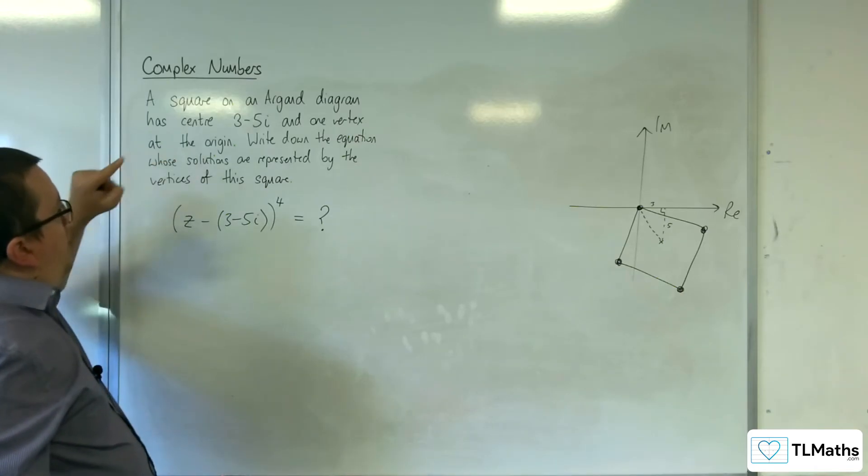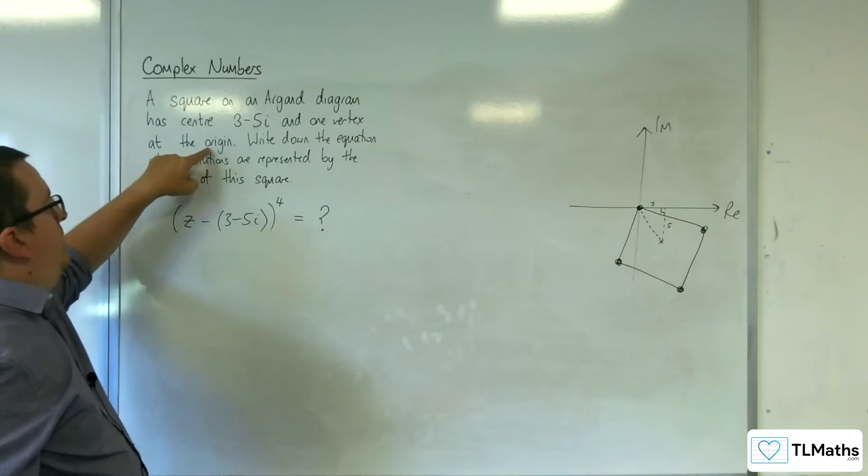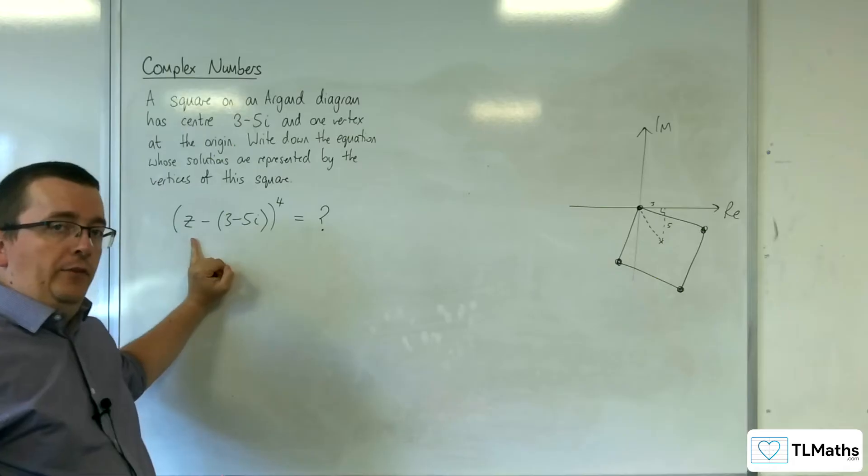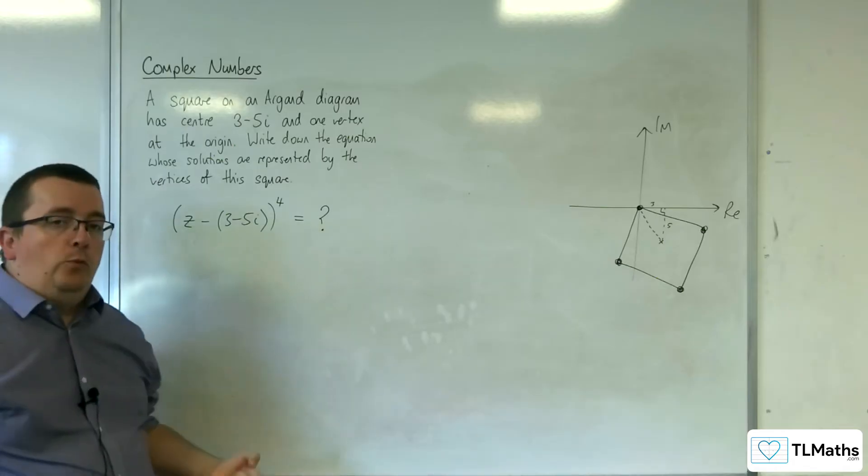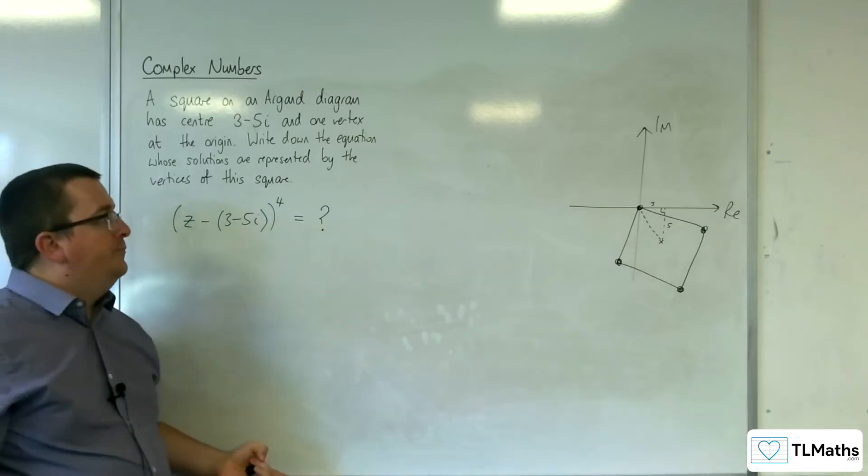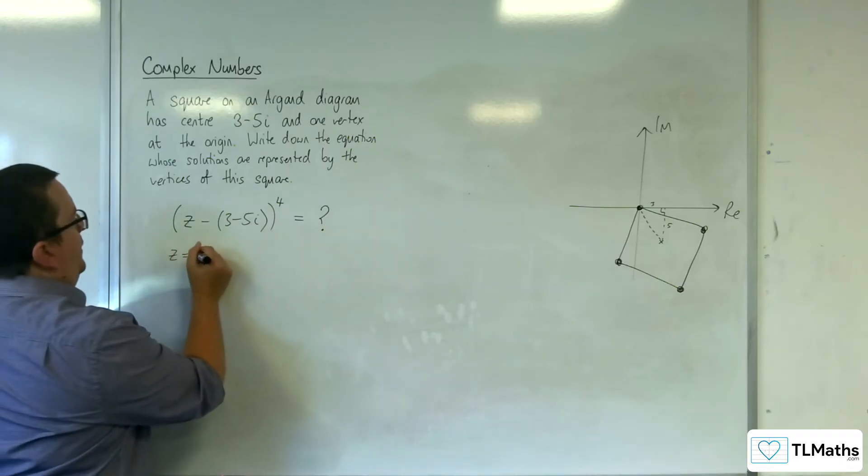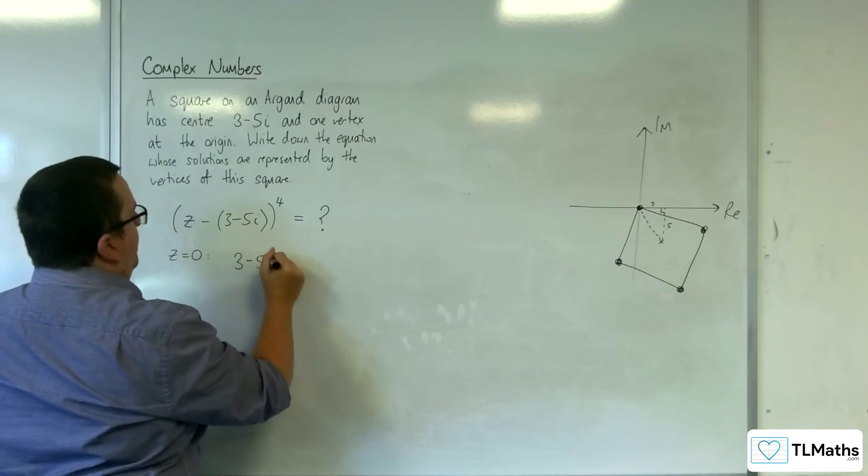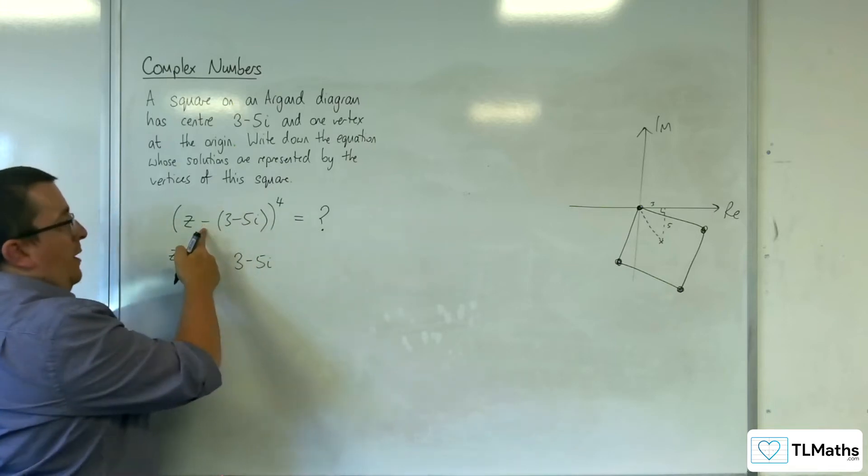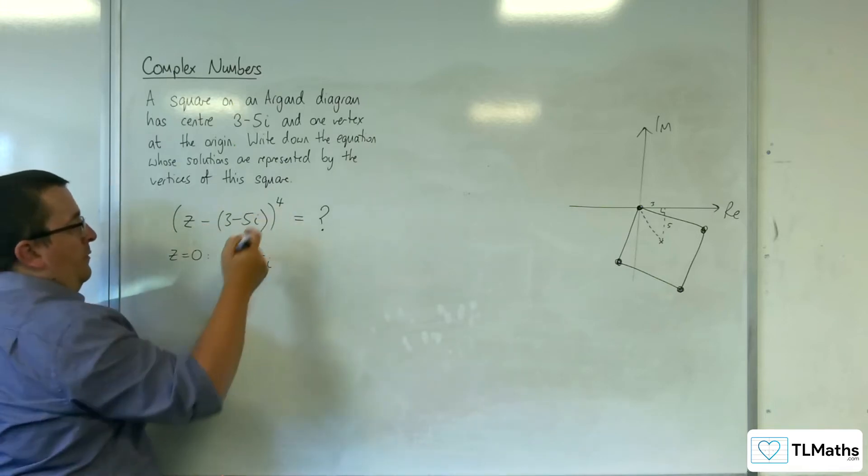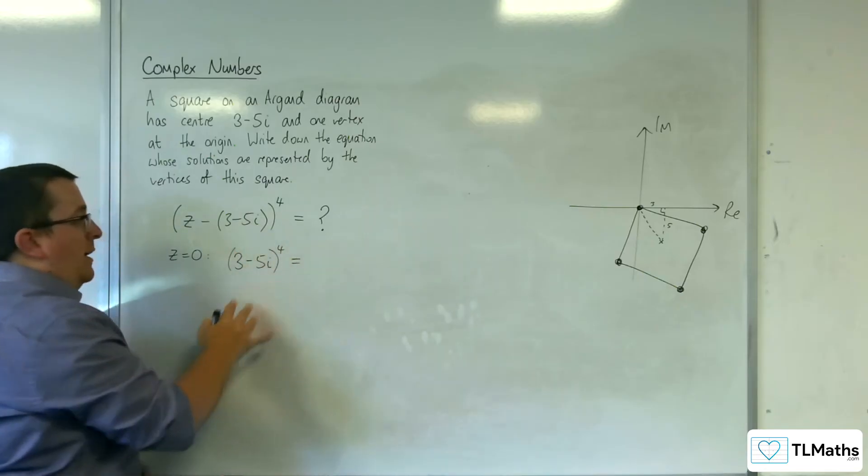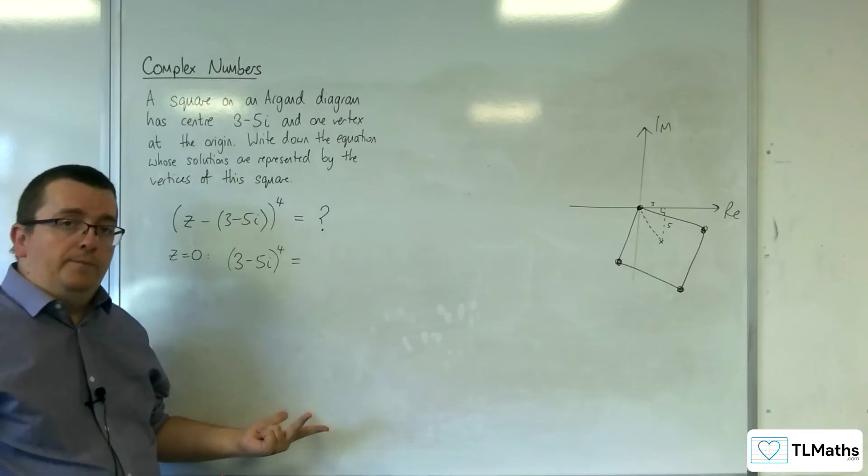Now I do know that because it's going through the origin, that if I substituted z = 0 into this, then I would be able to work out what that question mark is. So when z is 0, we must have 3 - 5i. The minus sign can be got rid of because of the power of 4, so (3 - 5i)^4. If I can work out that, that's the question mark.